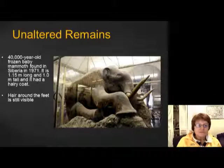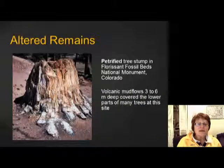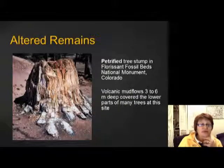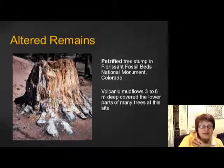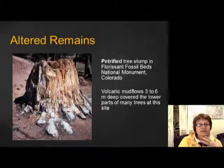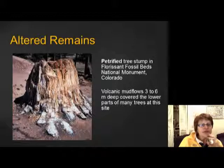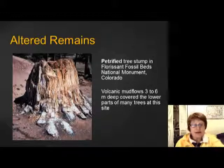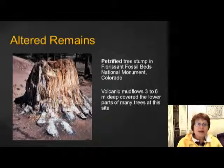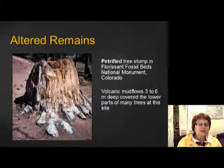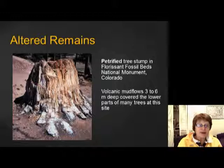For altered remains, one really good example is the petrified tree stump from Florissant in Colorado — there are a lot of preserved plants there, and the petrified forest is very similar. What happened was there was a forest, a nearby volcano erupted and covered the trees with ash up very high, and because of the ash composition, all the trees became silicified — really, really hard — and therefore they got preserved.